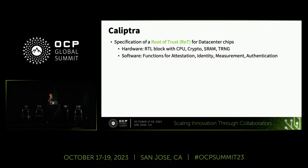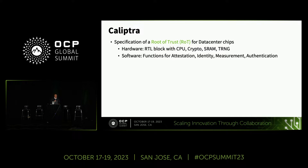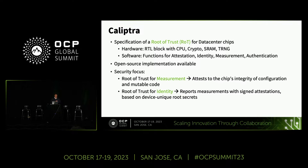Calyptra is a specification of a root of trust for data center chips. It has a hardware part — an RTL block with a CPU, crypto cores, SRAM, TRNG, and so on. It also has a software layer on top that contains functions for attestation, identity, measurement, and authentication. There is an open source implementation available, and we'll focus on the security part of it.